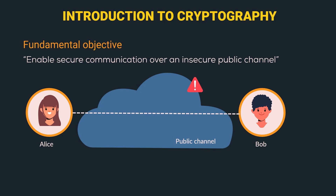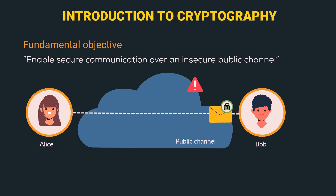Hence a message must be encrypted by the sender. Alice will encrypt the message and send it to Bob, who is the receiver. Then Bob will decrypt the message and can read it. So this is the fundamental objective of cryptography — to securely communicate over an insecure channel.